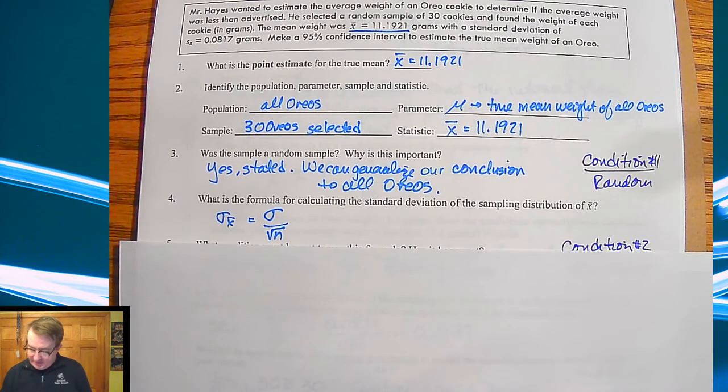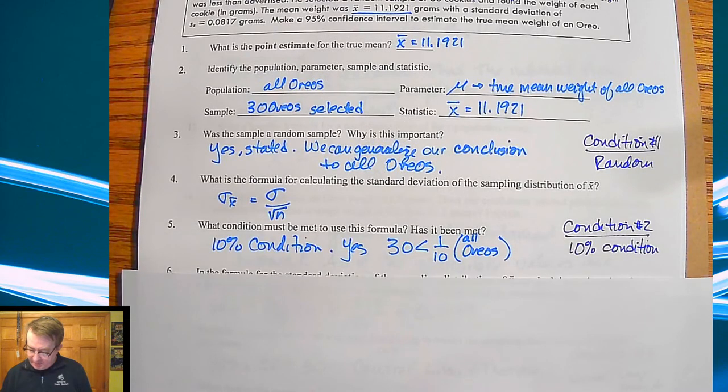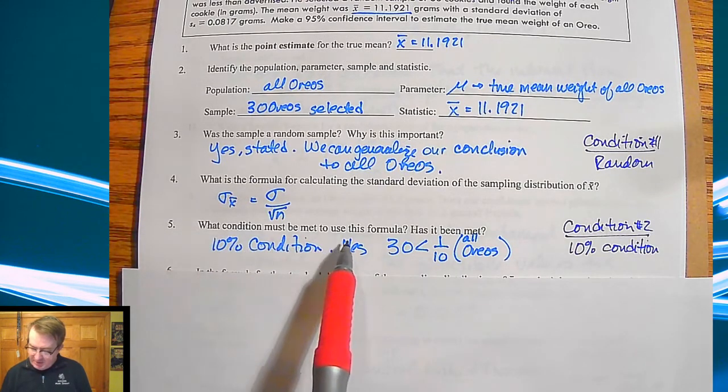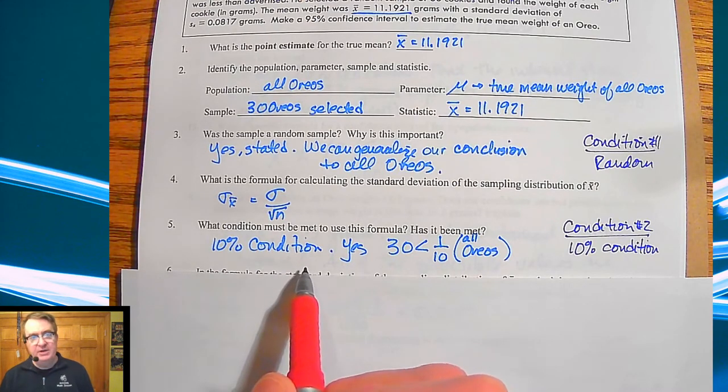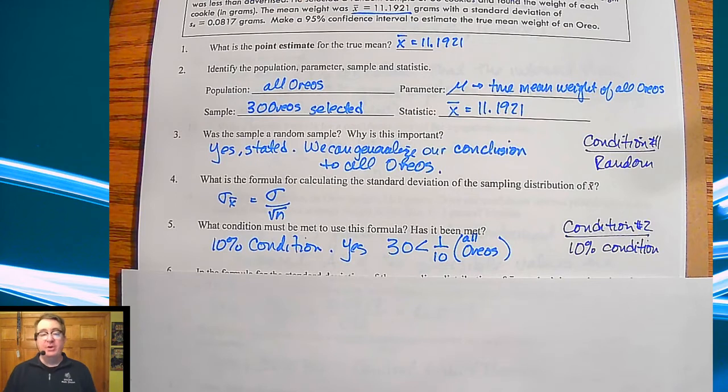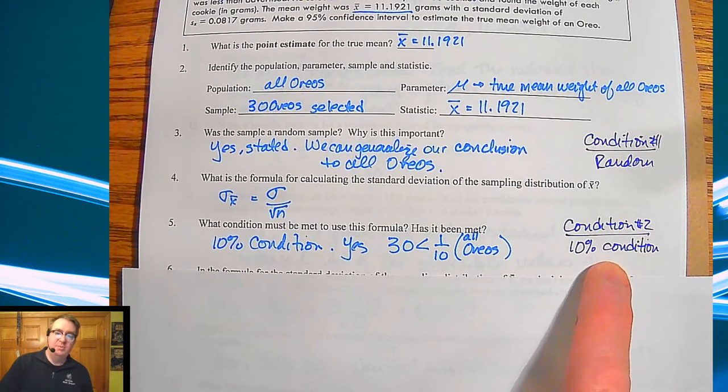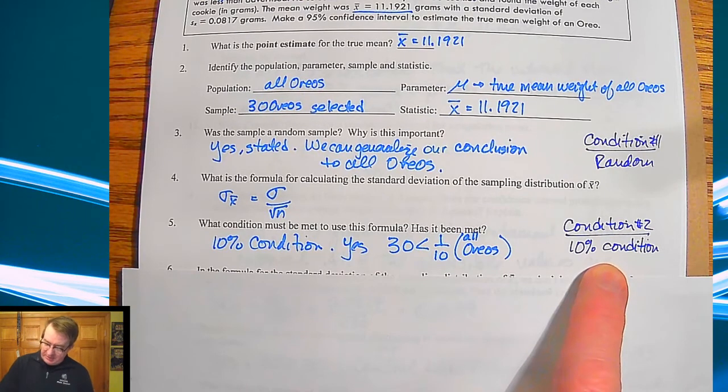Now obviously we've got a couple of hang-ups here but we'll talk about that there in a second. So what condition must be met to use this formula? Has it been met? We have to have our 10% condition. Obviously 30 is a lot less than one tenth of all Oreos so we're good there. So we don't have to worry about doing replacements so that's my 10% condition.